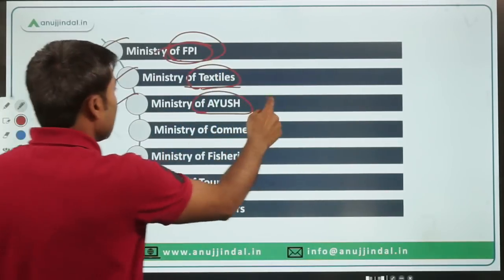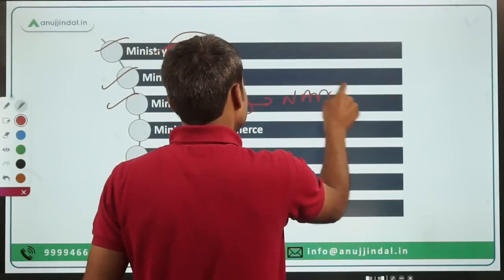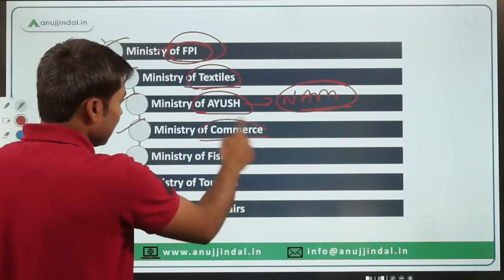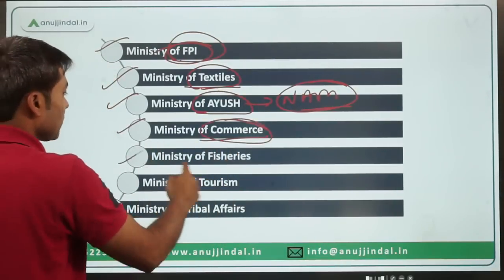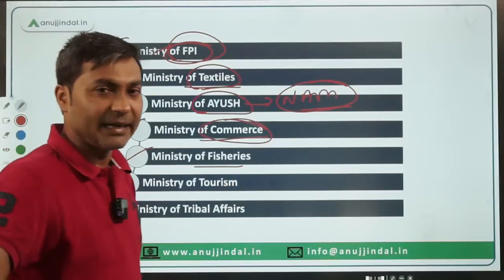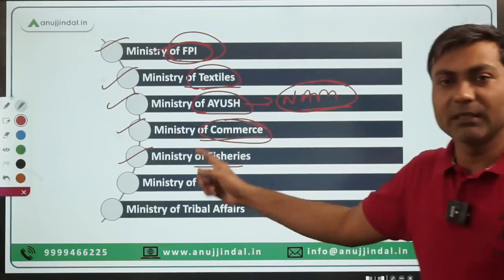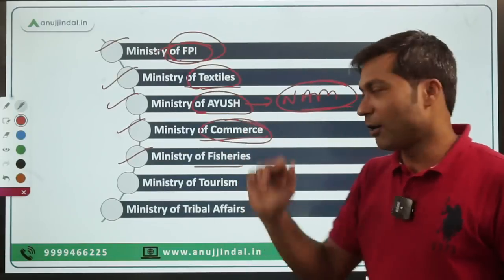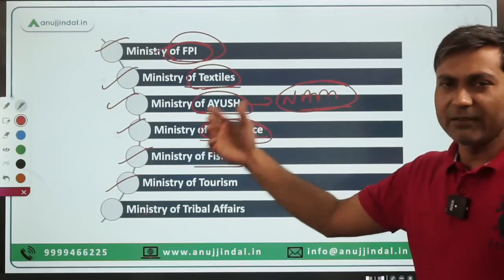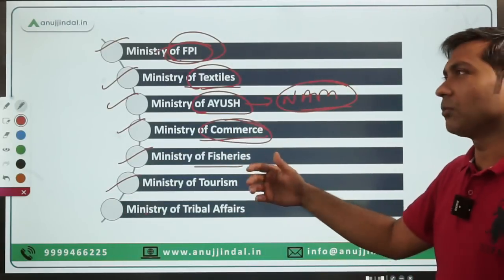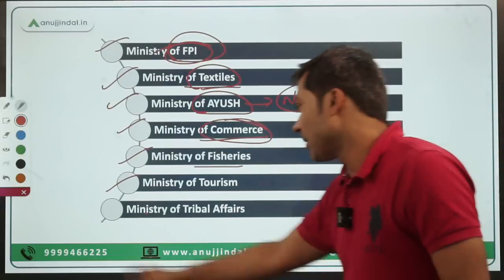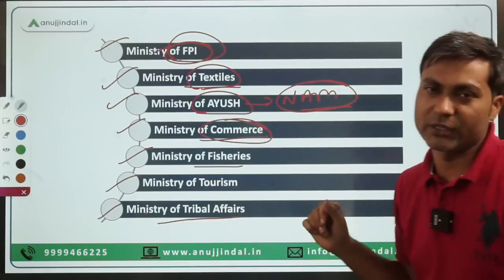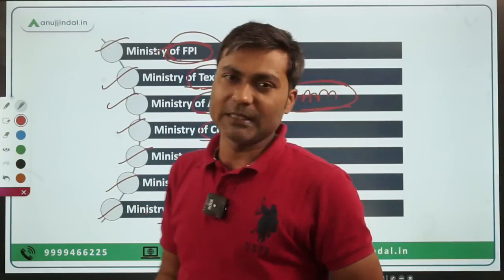Ministry of AYUSH — only one mission is important here, which is the National AYUSH Mission. Ministry of Commerce — only a few schemes. Ministry of Fisheries, Animal Husbandry and Dairying — the very important scheme here is Pradhan Mantri Matsya Sampada Yojana. Ministry of Tourism has various schemes. Ministry of Tribal Affairs — these are the important ministries.